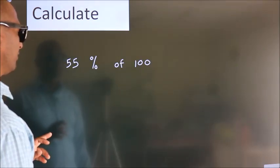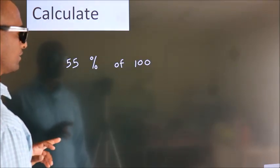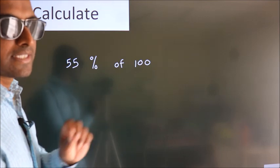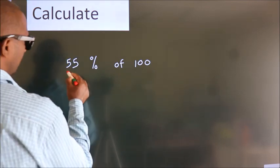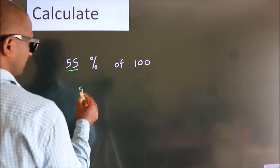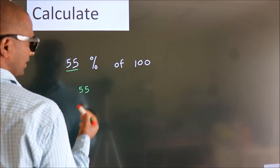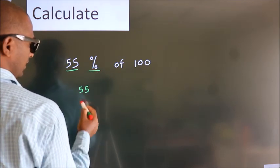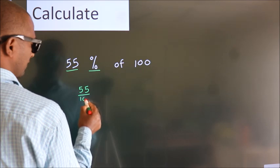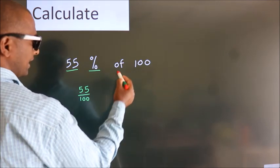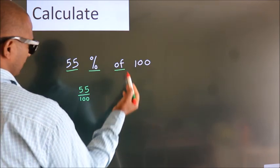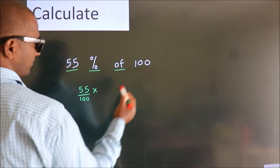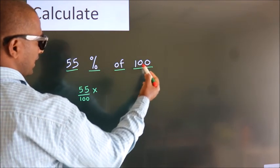Calculate 55% of 100. How do we calculate? This number as it is we write. In place of this percentage, we do by 100. In place of 'of', I write into this number as it is.